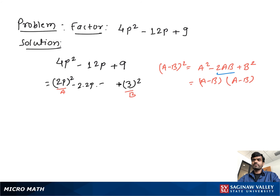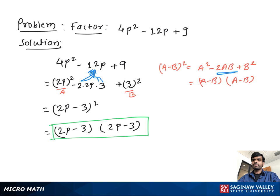Then write the middle part as 2 times 2p times 3, which is equal to 12p. Now it looks like a square minus 2ab plus b square form. So you can write this as 2p minus 3 all to the square form, or we can also write this as 2p minus 3 times 2p minus 3, and this is our final factor.